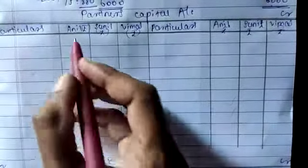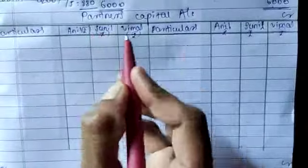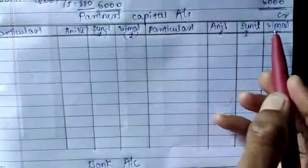How many partners are in this problem? That many columns you need for the amounts. So Anil, Sunil, Vimal on the debit side, and again Particulars, Anil, Sunil, Vimal on the credit side.